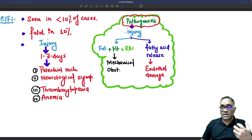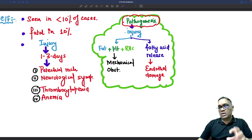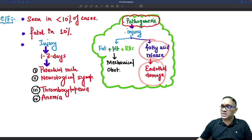In this pathogenesis, injury will cause mechanical obstruction by putting fat, platelets, and RBCs together, or maybe because of fatty acid release from the fat cells, which will cause endothelial damage.